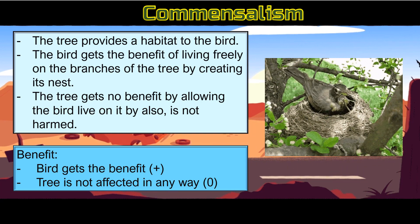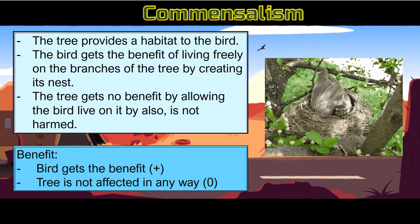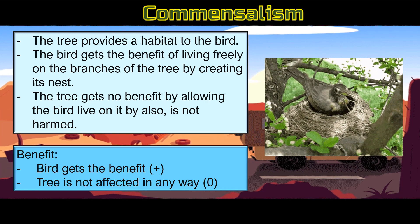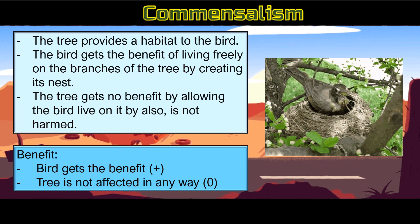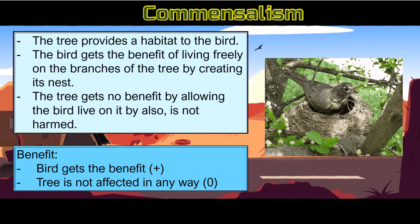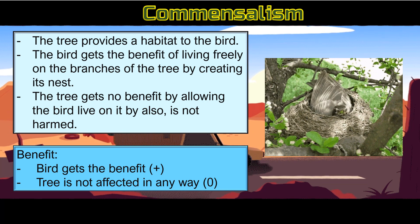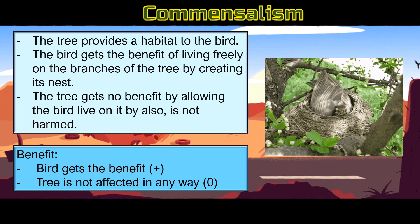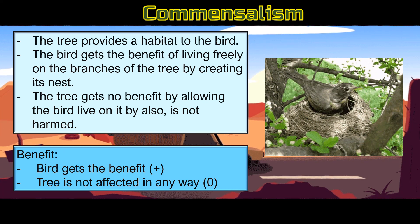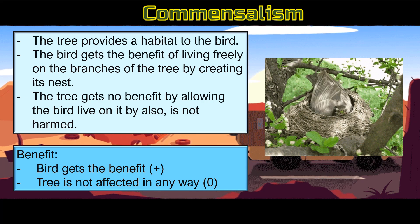In this relationship, the tree gets no benefit nor harm, which means the tree is not affected by the presence of the bird. Sa halimbawang ito, isa lang ang nakakatanggap ng benepisyo, at yun ay ang ibon. Habang nakikitira ang ibon sa puno, hindi apiktado sa anumang paraan ang puno. Wala itong natatanggap na benepisyo, at hindi rin ito napeperwisyon ng ibon.